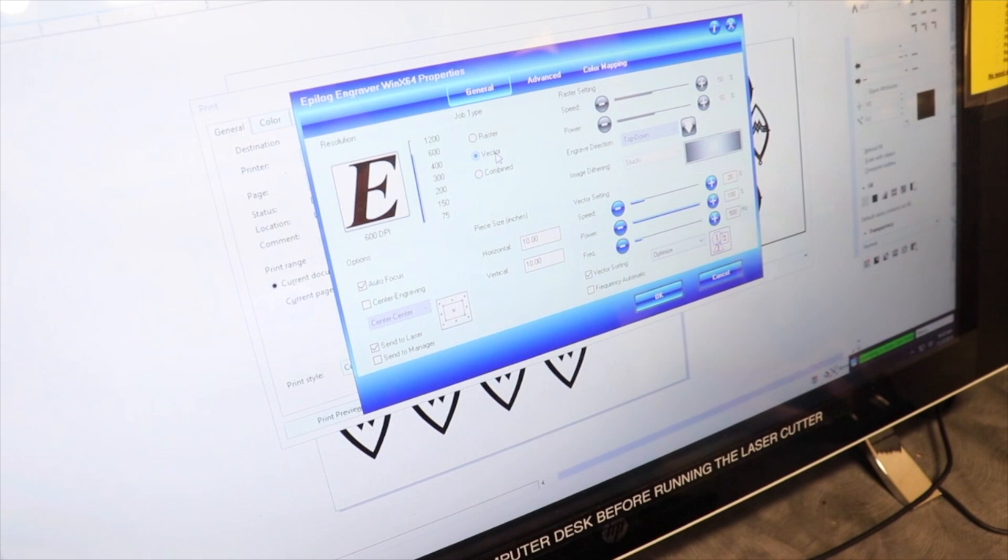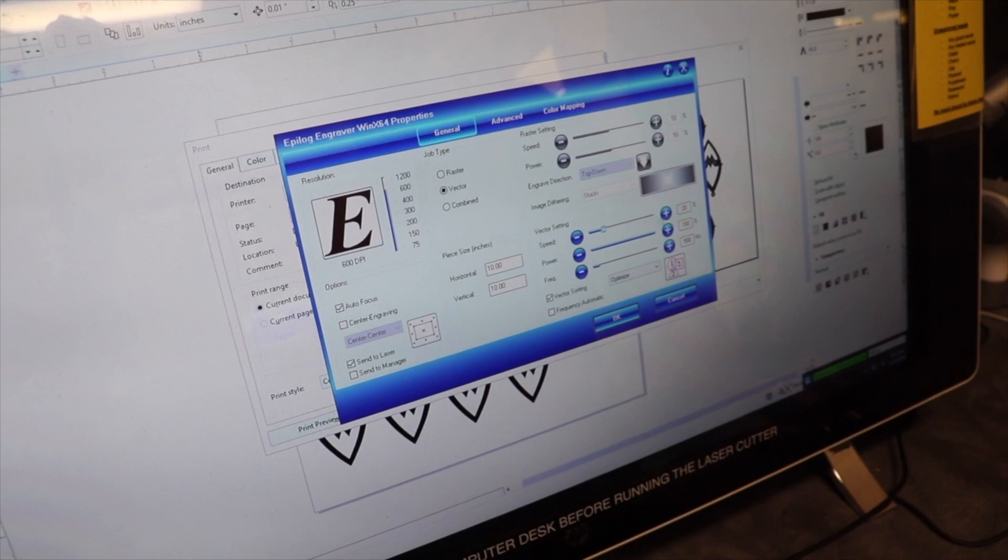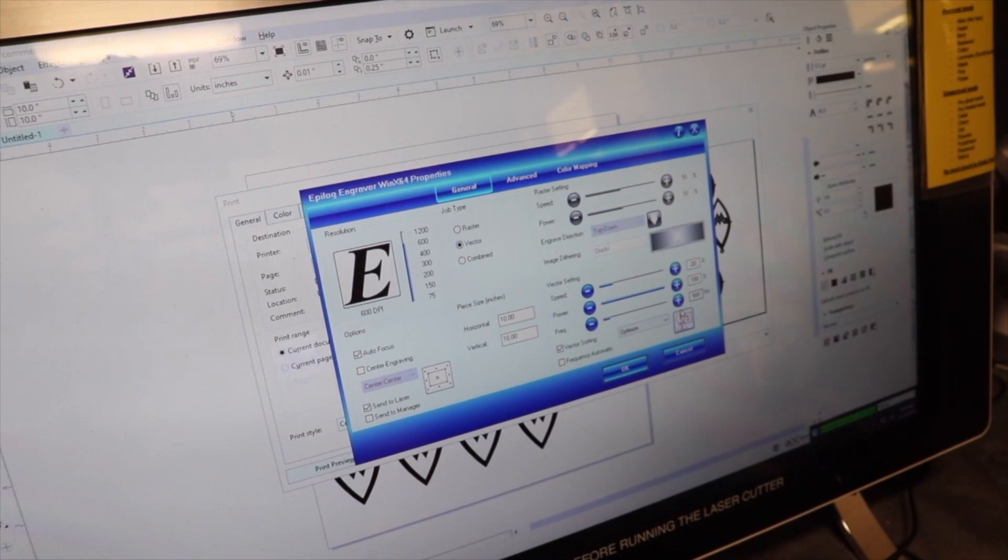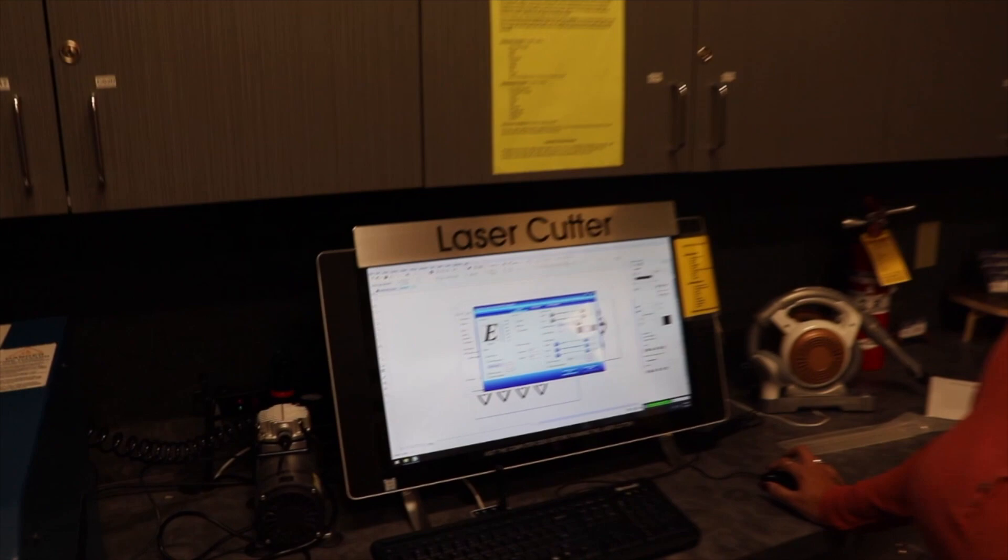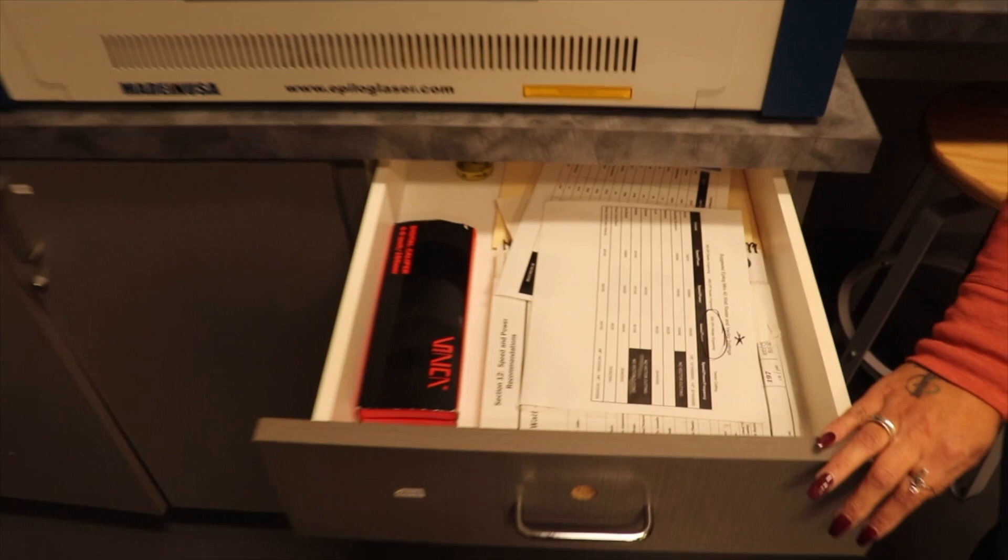The settings will be 20 for speed, 100 for power, and the frequency will be set to 500. You will see in a sheet here that we have for all patrons that will tell you all the settings per cut.